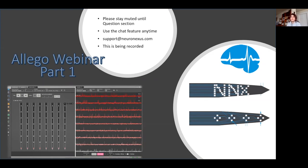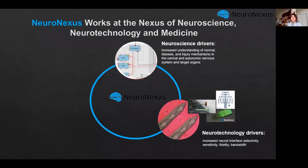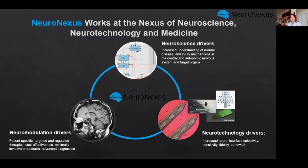Let me tell you what we at Neuronexus do. We support neuroscience by providing neurotech tools. Our goal is to increase recording capability, learn from brain features, provide more information to support neuroscientists, and at the same time help people in the neuromodulation field treat diseases like Alzheimer's through micro-stimulation approaches.